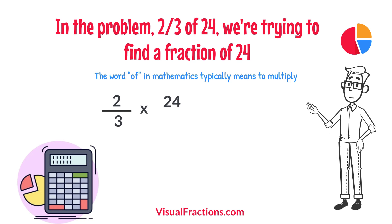To simplify the calculation, we first convert our whole number into fraction form, writing 24 as 24 over 1. This transformation makes it easier to work with our numbers as fractions.